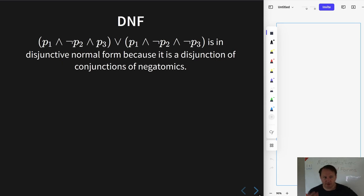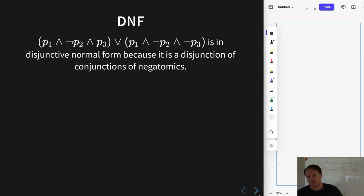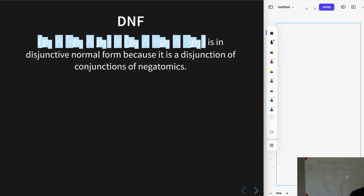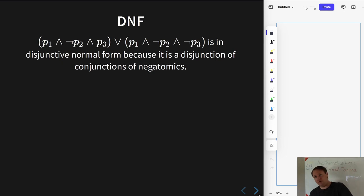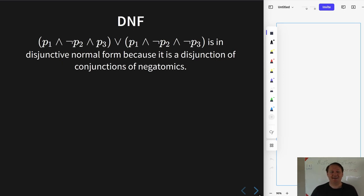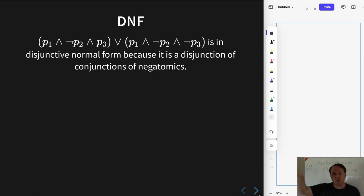To introduce the idea of a disjunctive normal form, I'll start with an example right away. This formula is already in what we call disjunctive normal form, because its main operator is a bunch of disjunctions. In general we could have many disjunctions — really any number would be acceptable — we would still call it disjunctive normal form, as long as these main operators are disjunctions. I'll be more rigorous about this in a minute, but I just want to give you the intuition for now.